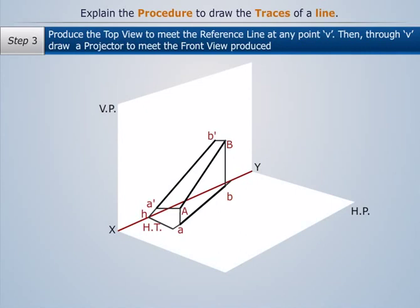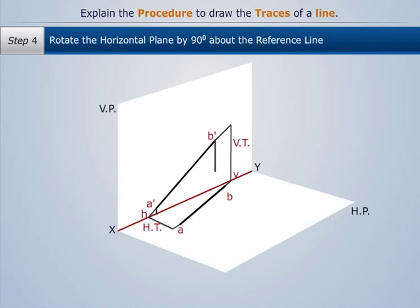So let's produce AB. Let's mark the point at which AB meets the reference line XY as V. Then, let's produce A-B- till it intersects the projector from point V. This line is called the vertical trace.